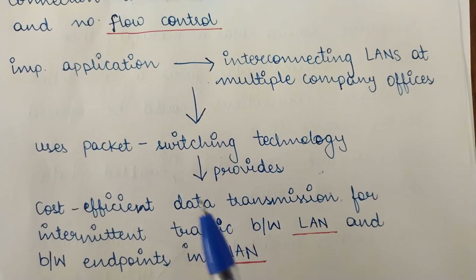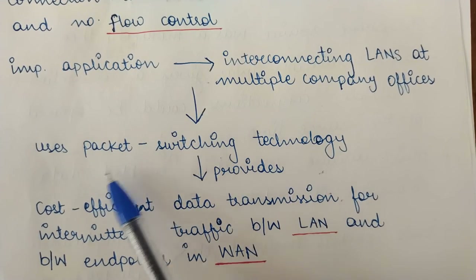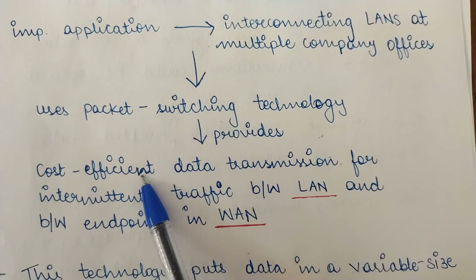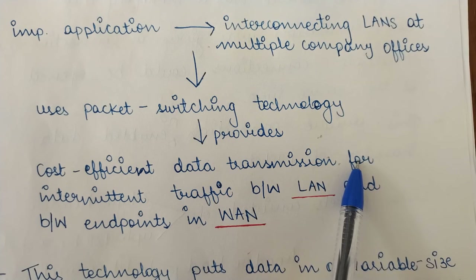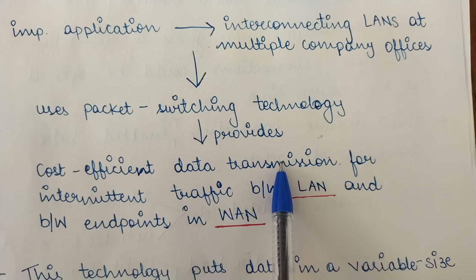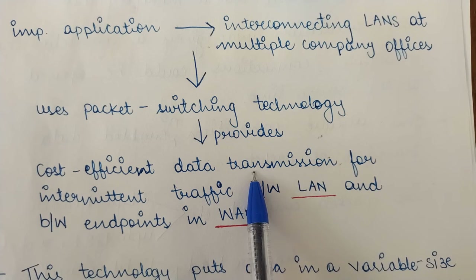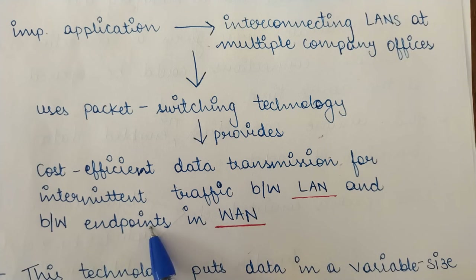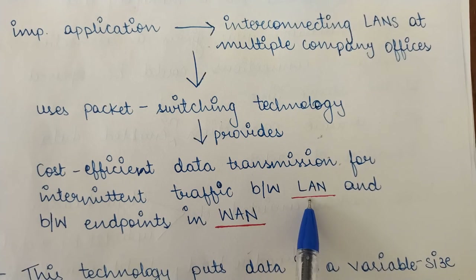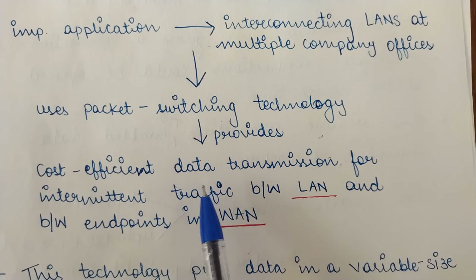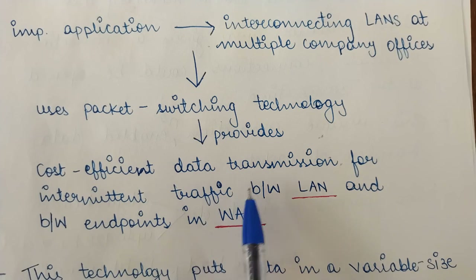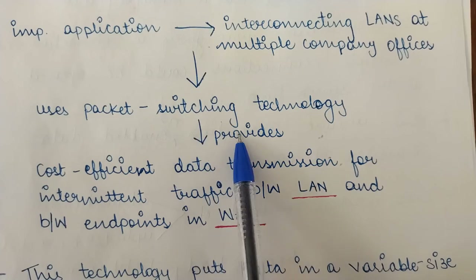The technology Frame Relay uses is packet switching, which helps provide cost-efficient data transmission. This data transmission is done for intermittent traffic between LANs and between end points in WANs. Frame Relay is used to provide cost-efficient data transmission between various LANs and the end points of those LANs.